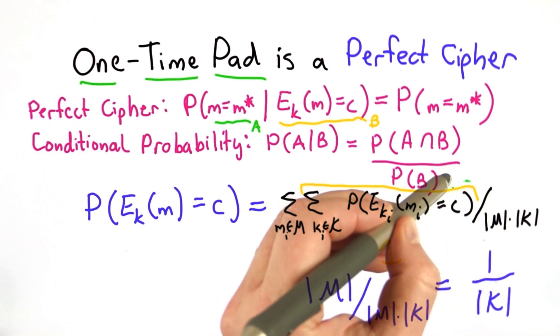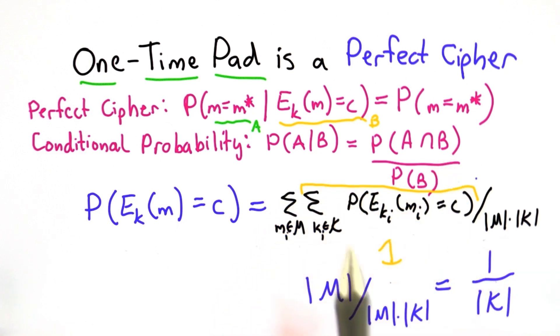So that's the probability of event B, which is the probability that some message encrypts to some key. And notice this is computed over all the messages, so that's over the distribution.